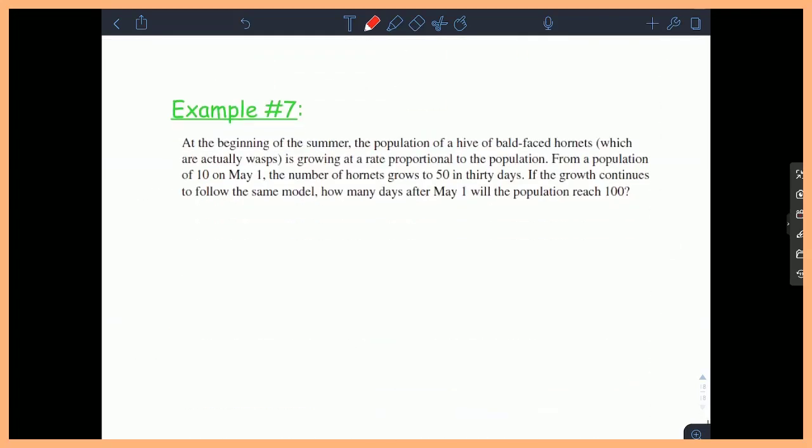Let's try an example. Example 7 says, at the beginning of the summer, the population of a hive of bald-faced hornets, which are actually wasps, is growing at a rate proportional to the population. Very important. Once they told me that it's growing at a rate proportional, that means, since dY/dt is equal to KY, that means the growth is exponential.